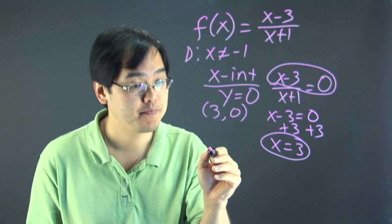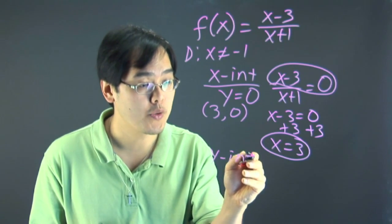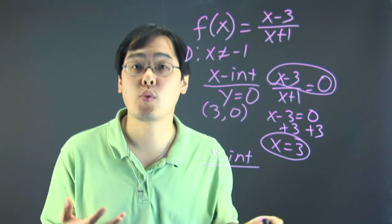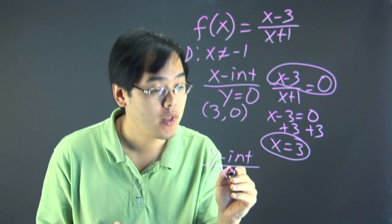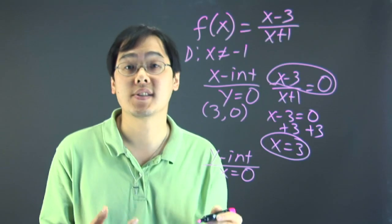Now to find the y intercept, you go the other way. You want to find out where it touches the y axis if any, and the y intercept, as you know, x is equal to zero. So this is arguably perhaps the simpler of the two because you let x equal to zero in the original function.